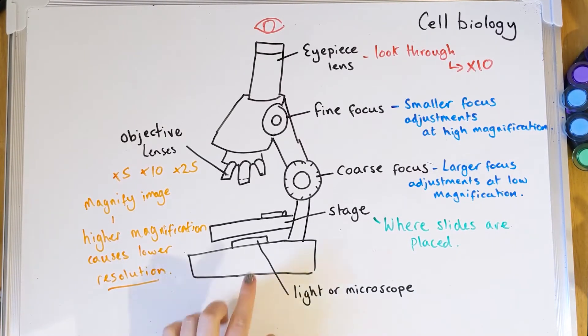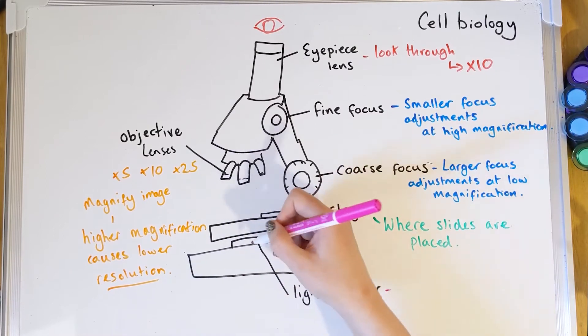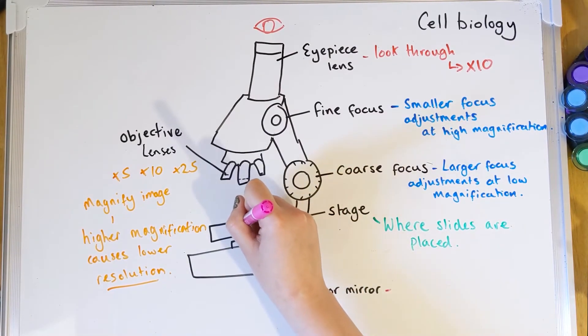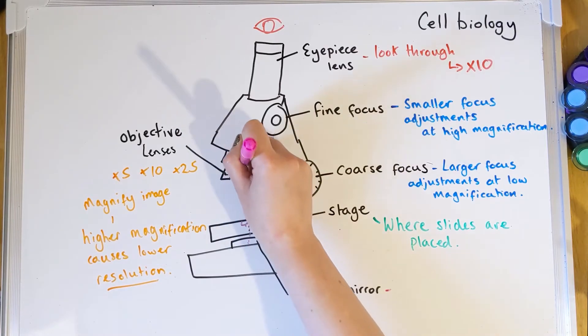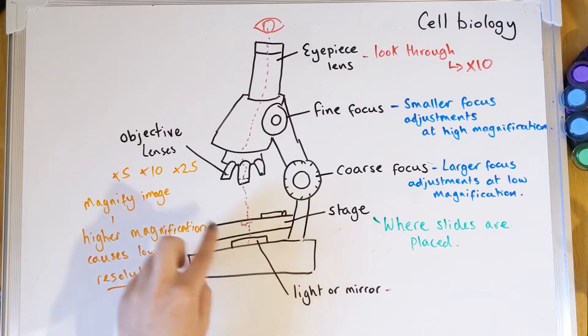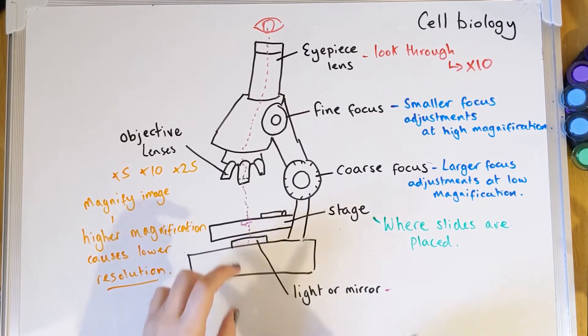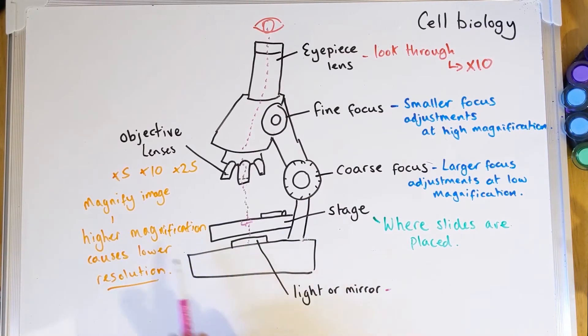At the bottom you've got the light or the mirror. On a newer or posher microscope you'll have a built-in light that shines a beam up through a little hole in the stage, through the specimen, through the objective lens, and reflects into your eye via a series of mirrors. If you have an older microscope with a mirror, you adjust it to bounce an external light source up into the eye. Both serve the same purpose.